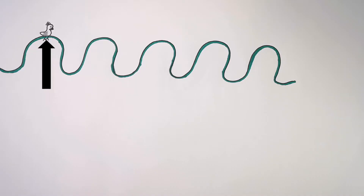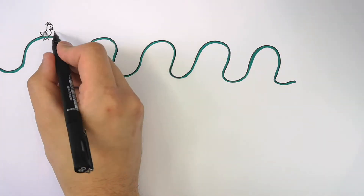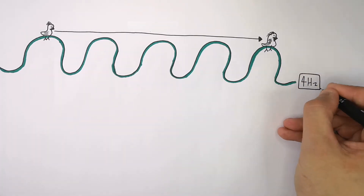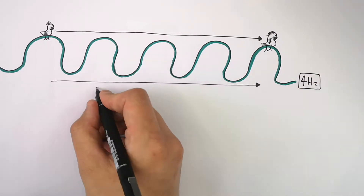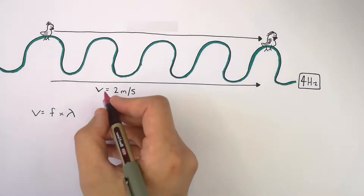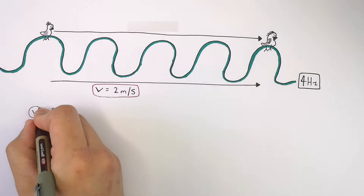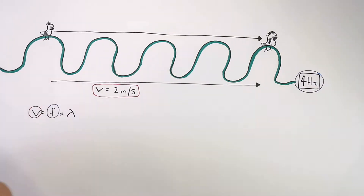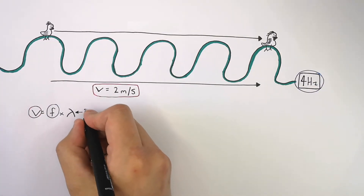This duck is floating on the peak of a wave, and there are four complete wavelengths separating this bird and another bird, which is floating on another peak of another wave. The frequency of the wave is four hertz. The wave speed is two meters per second. So we know what V is — two meters per second — and we know what F is — four hertz. But what is the wavelength, lambda?